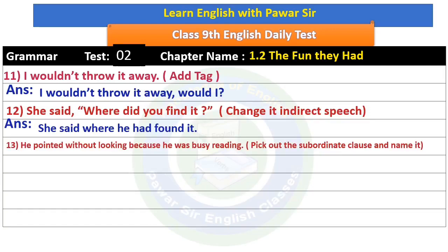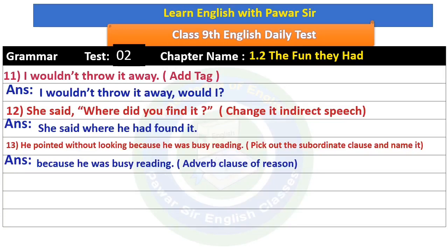Question number 13: 'He pointed without looking because he was busy reading.' Pick out the subordinate clause and name it. A subordinate clause is the part joined by a conjunction. Here, 'because he was busy reading' is the subordinate clause. Because it gives a reason, it is an adverb clause of reason.